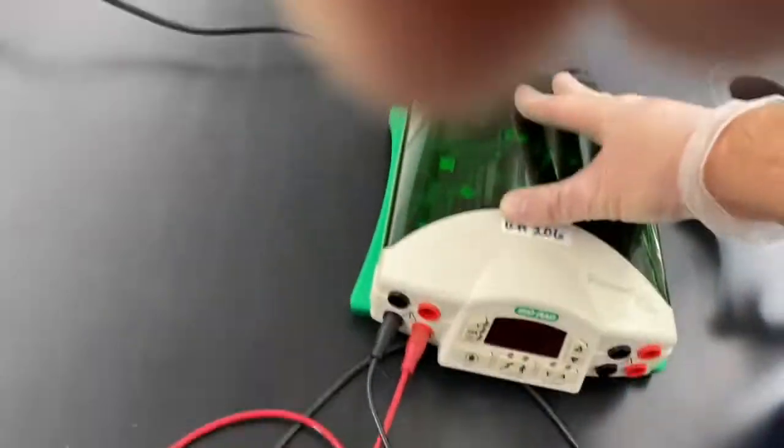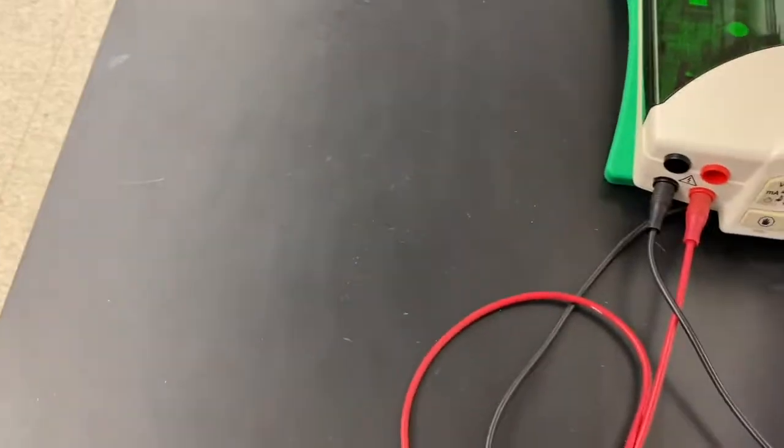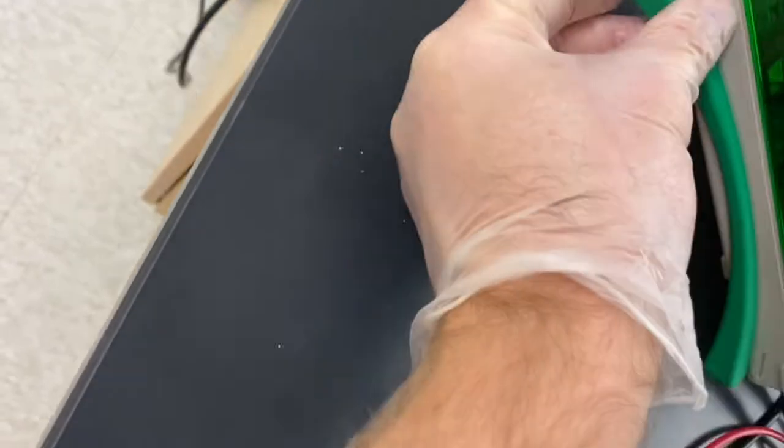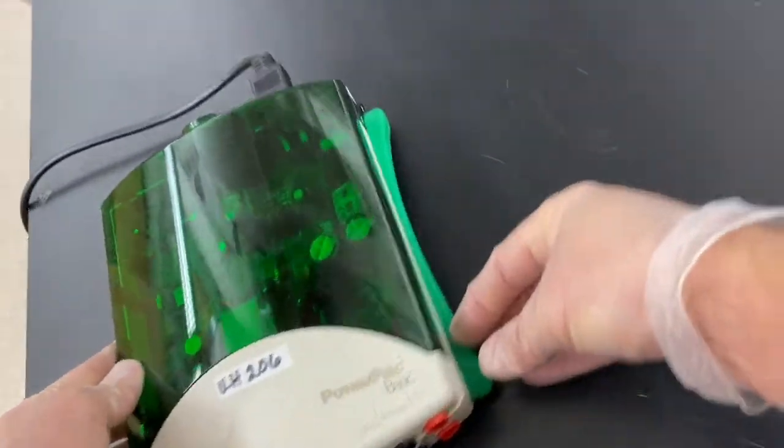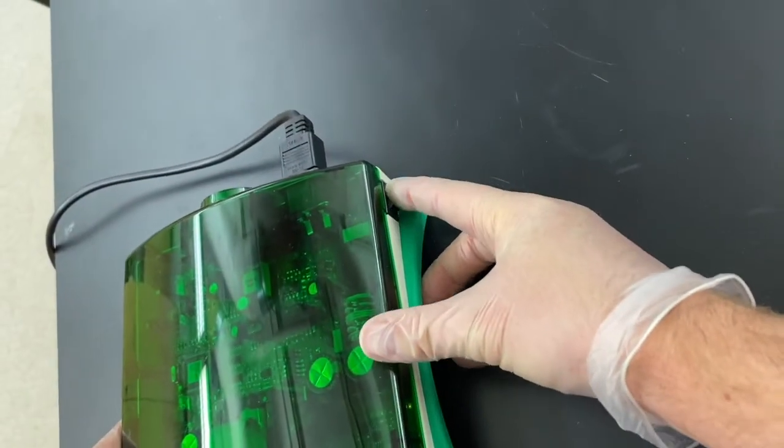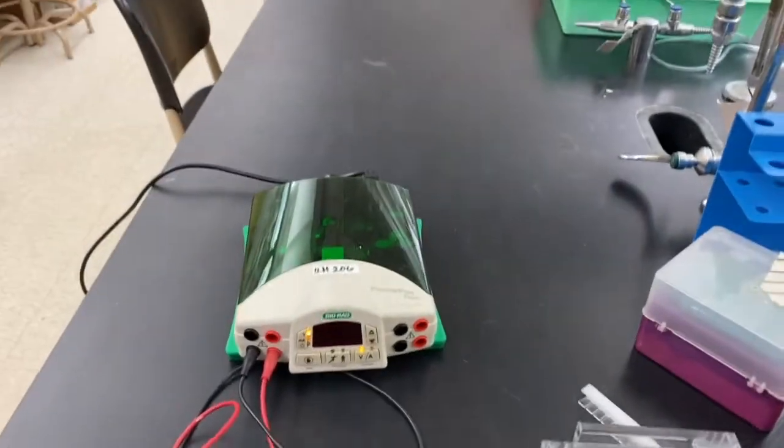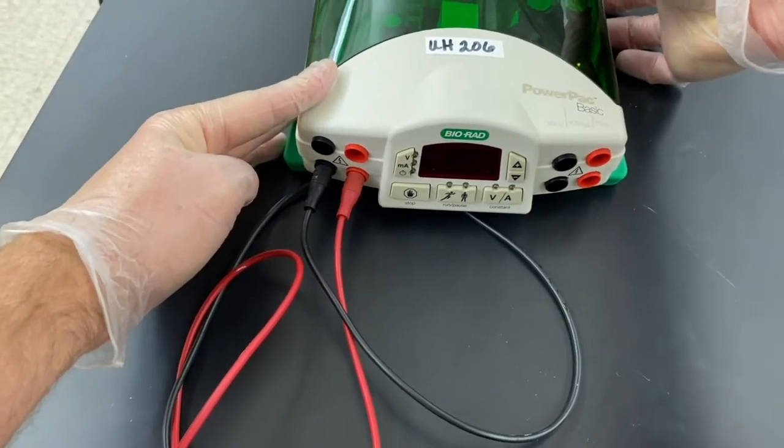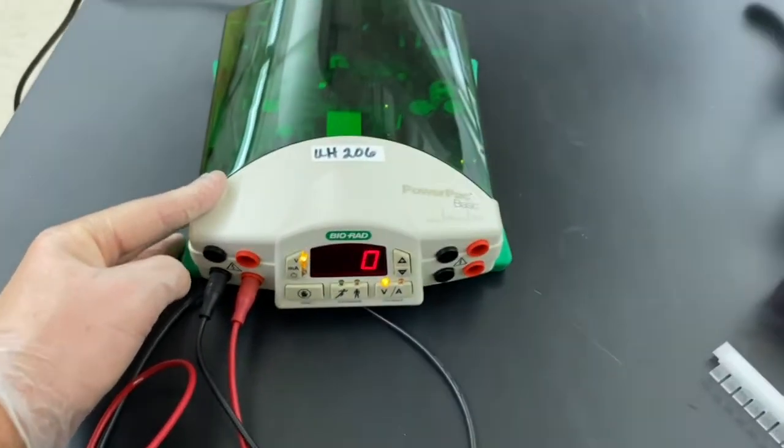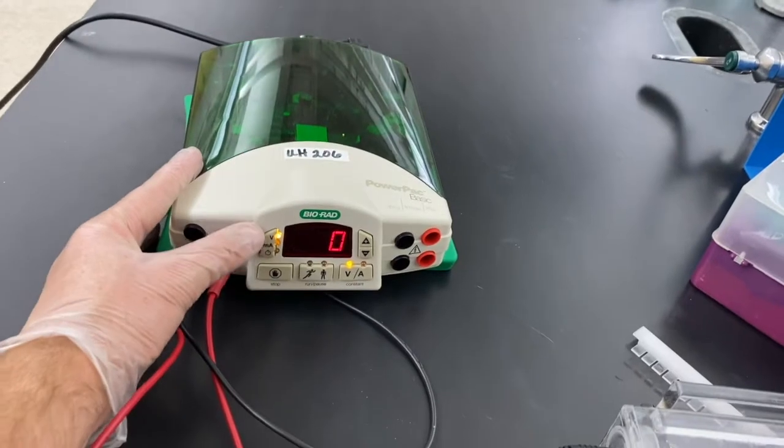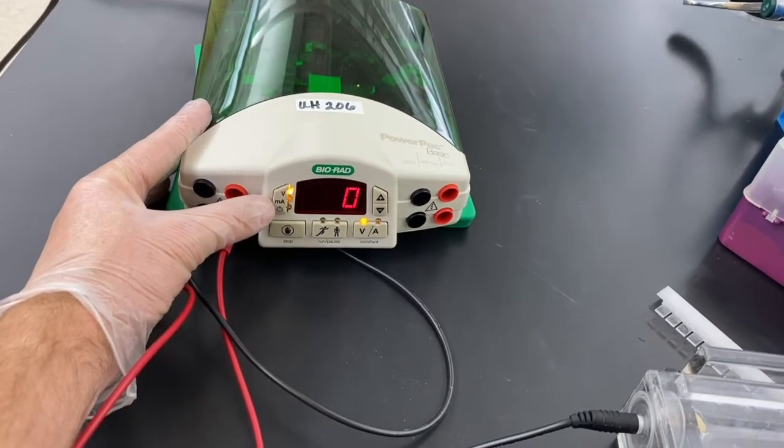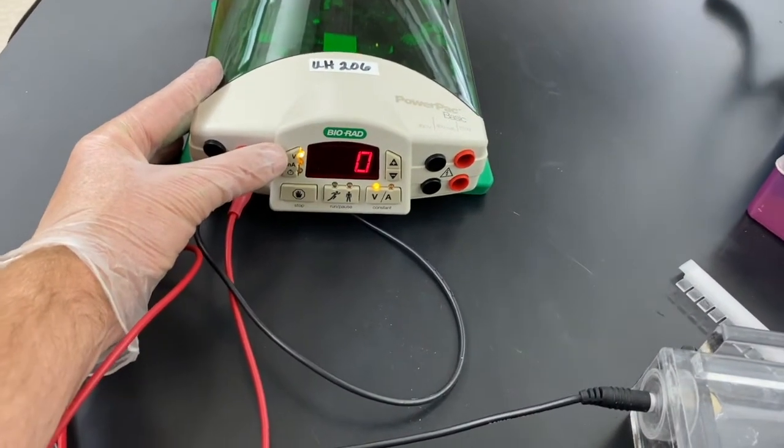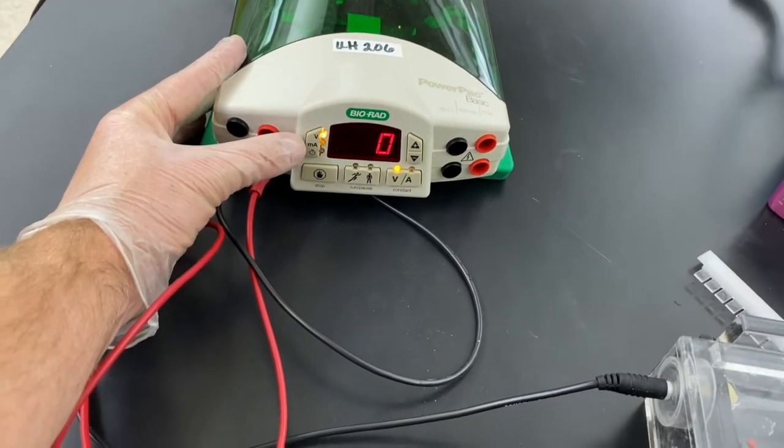And there we go. On the back here is a power switch. Power switch here turns this device on. It's set for voltage. So V means that it's going to hold the voltage constant. You also could set it for amperage, milliamps. If you remember from physics, voltage is a measure of resistance. Amperage is a measure of current. So we're going to set it for voltage.